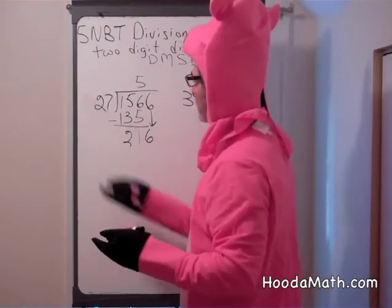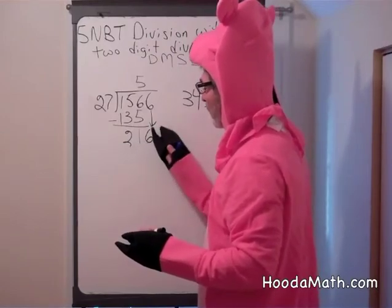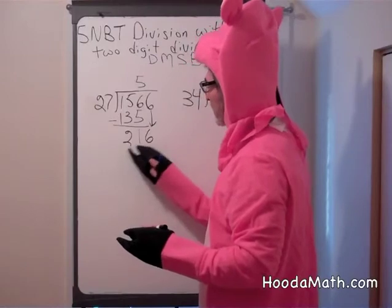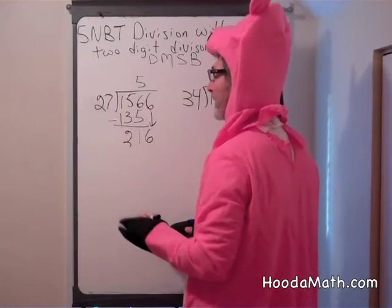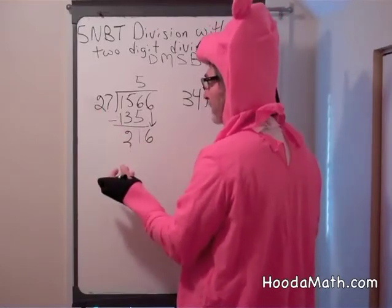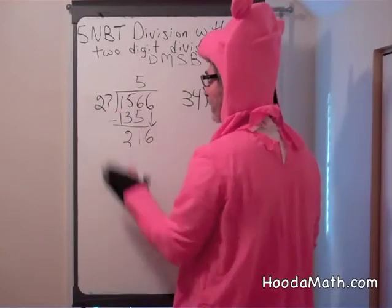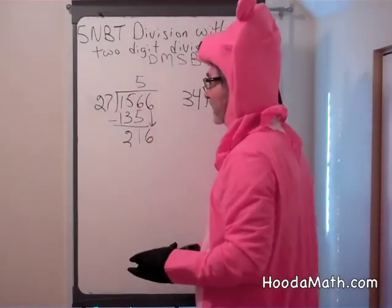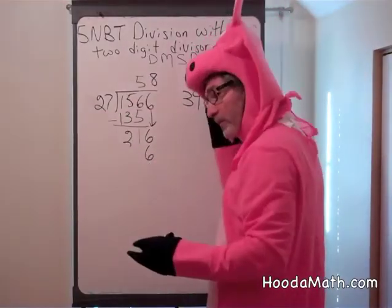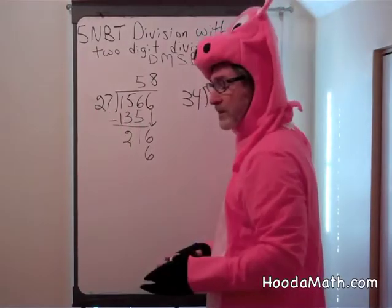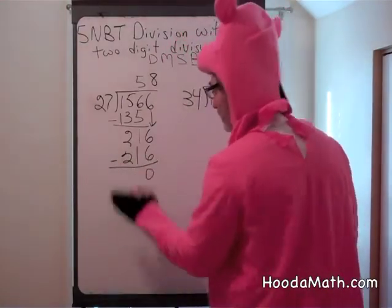Now 27 is about 30, a little bit less. 216 — think of it as 21 and 6, so about 22. Because 27 is smaller than 30, we think it will divide either 7 or 8 times. 7 times 7 gives a 9, so 49 there. 8 times 7 gives 56, so there will be a 6 — let's try 8. 8 times 7 is 56; carry the 5. 8 times 2 is 16, and 5 is 21. Now we subtract, and we have a remainder of 0.